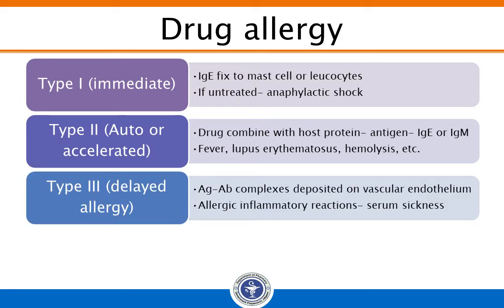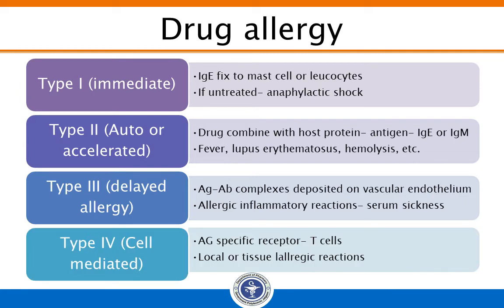The third type is delayed allergy, which occurs after 72 hours but within 1 to 2 weeks. Antigen-antibody complexes are deposited on vascular endothelium and activate complement. It is characterized by allergic inflammatory reactions in tissues. The fourth type is cell-mediated allergy, where antigen-specific receptors are developed on T-cell lymphocytes, which when activated after subsequent exposure to the drug lead to local or tissue allergic reactions like photosensitization and contact dermatitis.